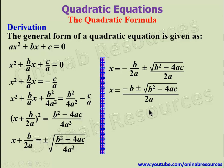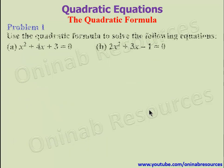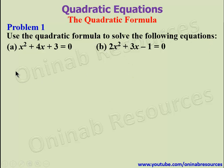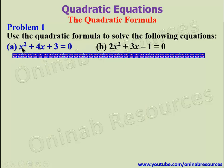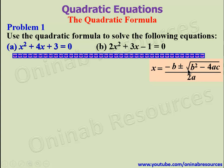We shall now use this formula to solve quadratic equations. Problem one: use the quadratic formula to solve the following equations. Part a: x squared plus 4x plus 3 is equal to zero. Part b: 2x squared plus 3x minus 1 is equal to zero. Starting with part a, we introduce our formula: x equals negative b plus or minus the square root of b squared minus 4ac, all over 2a.